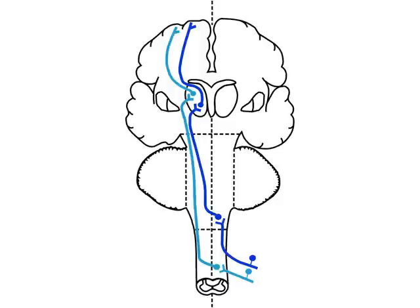As we look at the spinal thalamic tracts, they enter the spinal cord and cross almost immediately to the opposite side, then ascend up to the thalamus and onto the cortex.